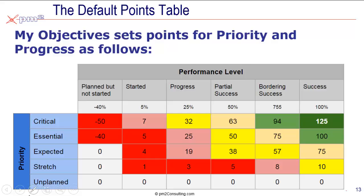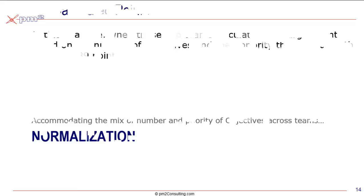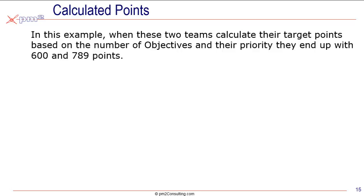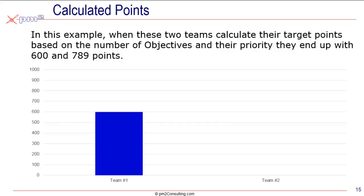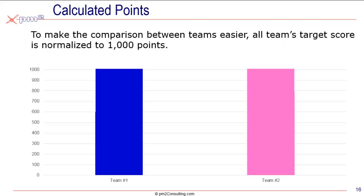That sets up the point system. Now let's talk about the concept of normalization. Normalization accommodates the fact that different teams have different mixes of objectives. For example, let's say we have two teams and they've tallied what they need to do for the coming game. Based on objectives and priorities, team 1's score adds up to a potential of 600 points, and team 2's score adds up to 789. These two teams have set their objectives based on their scope of work, but now it makes it hard for management to compare these two things — we have apples and oranges.